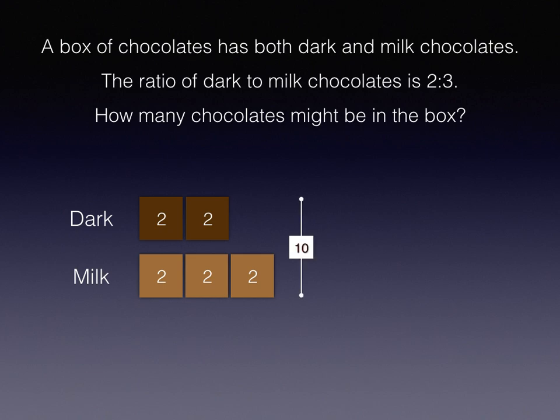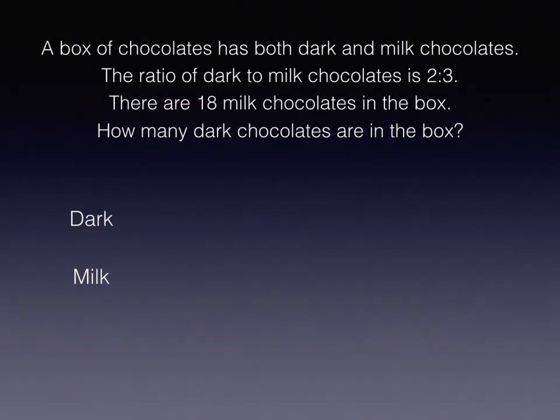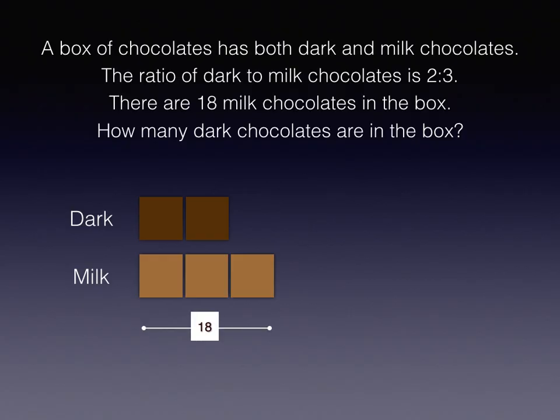So without more information, we don't really know how many chocolates there are in the box. In the next problem, we have more information that's given. First, the ratio of dark to milk chocolates is still 2 to 3, but we are told that there are 18 milk chocolates in the box. And the question asked is how many dark chocolates are there?